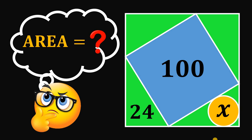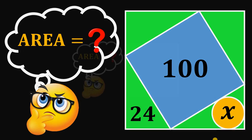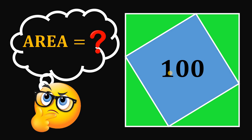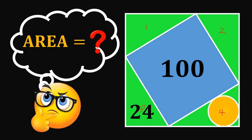Can you solve this geometry challenge? Here's the question. Given this square, draw a square inside of it with an area of 100 square units. Then the area of these 4 right triangles must be equal to 24 square units. Now let's draw a circle inside of it with an area of x square units. What is the area of this circle represented as x?